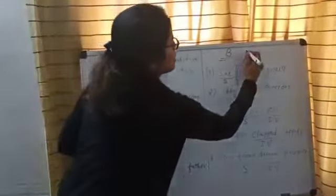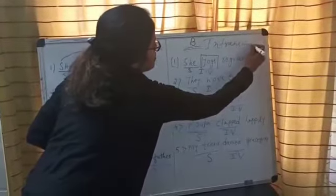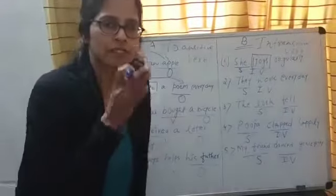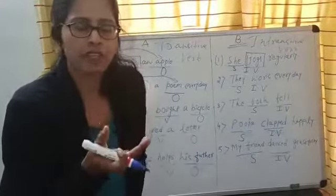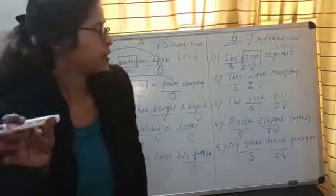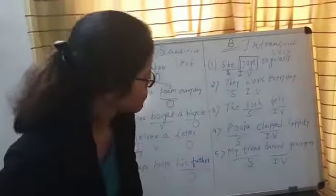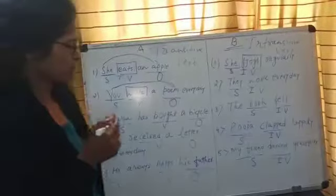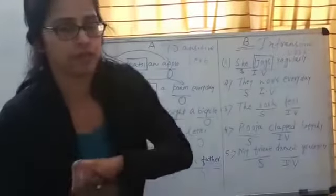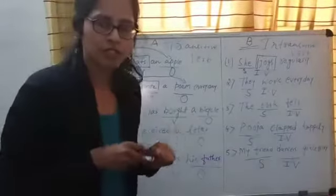So, transitive verb and intransitive verb: a transitive verb has a direct object to receive the action performed by the subject, whereas an intransitive verb doesn't have any direct object to receive the action performed by the subject. Students, I am going to talk about three significant points related to transitive and intransitive verbs in my next video. Do watch part two of this video as well.